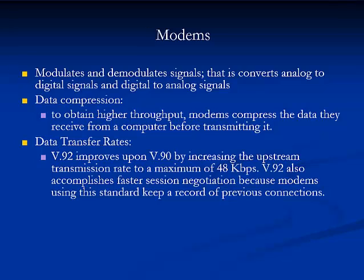A modem not only modulates and demodulates signals, but also performs data compression, error correction, and data buffering. The majority of modem standards are set by the International Telecommunications Union, or ITU. Standards set data rates and other features and performance. For example, modem standard V.90 defines 56 kilobits per second asymmetrical transmission in which one of the modems is assumed to be using a digital line. V.92 improves upon V.90 by increasing the upstream transmission rate to a maximum of 48 kilobits per second.